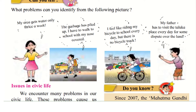In the first picture, this girl is saying: 'My area gets water only three times a week.' That means she gets a water supply only three days in a week. So, what problem is she facing? She is facing the problem of water cut or less water supply.